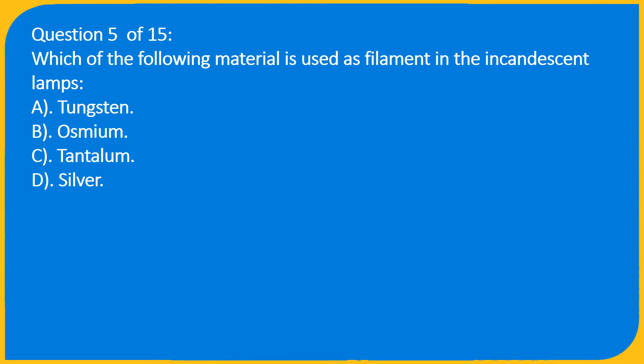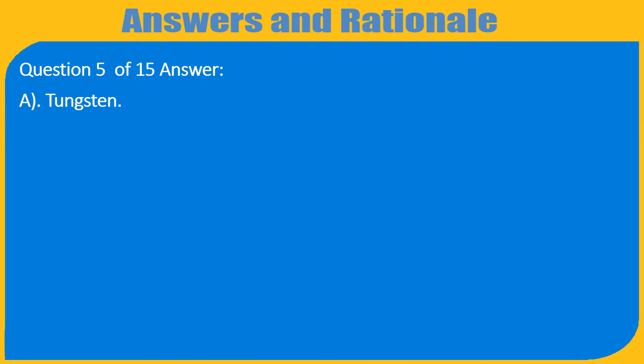Question 5 of 15: Which of the following material is used as filament in the incandescent lamps: A. Tungsten, B. Osmium, C. Tantalum, D. Silver. Answer: A. Tungsten.